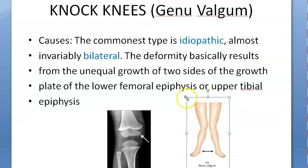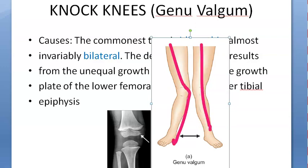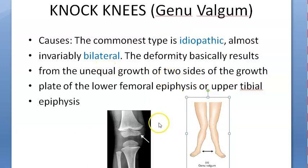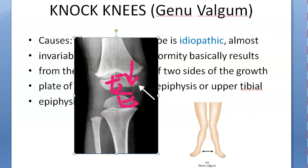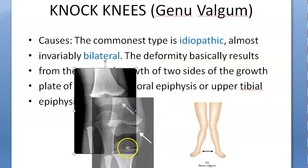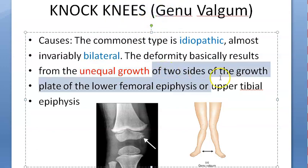It is idiopathic and it is bilateral. It can be unilateral — where only one leg is bent inside and the other leg is proper — but it is mostly bilateral. So this is idiopathic; they don't know why it happens exactly. The commonest type is idiopathic. There are other causes. Basically here the lower epiphysis of the femur and the upper epiphysis of the tibia — there is some problem in these two. There is unequal growth of the two sides of the growth plate of the lower femoral epiphysis and the upper tibial epiphysis.